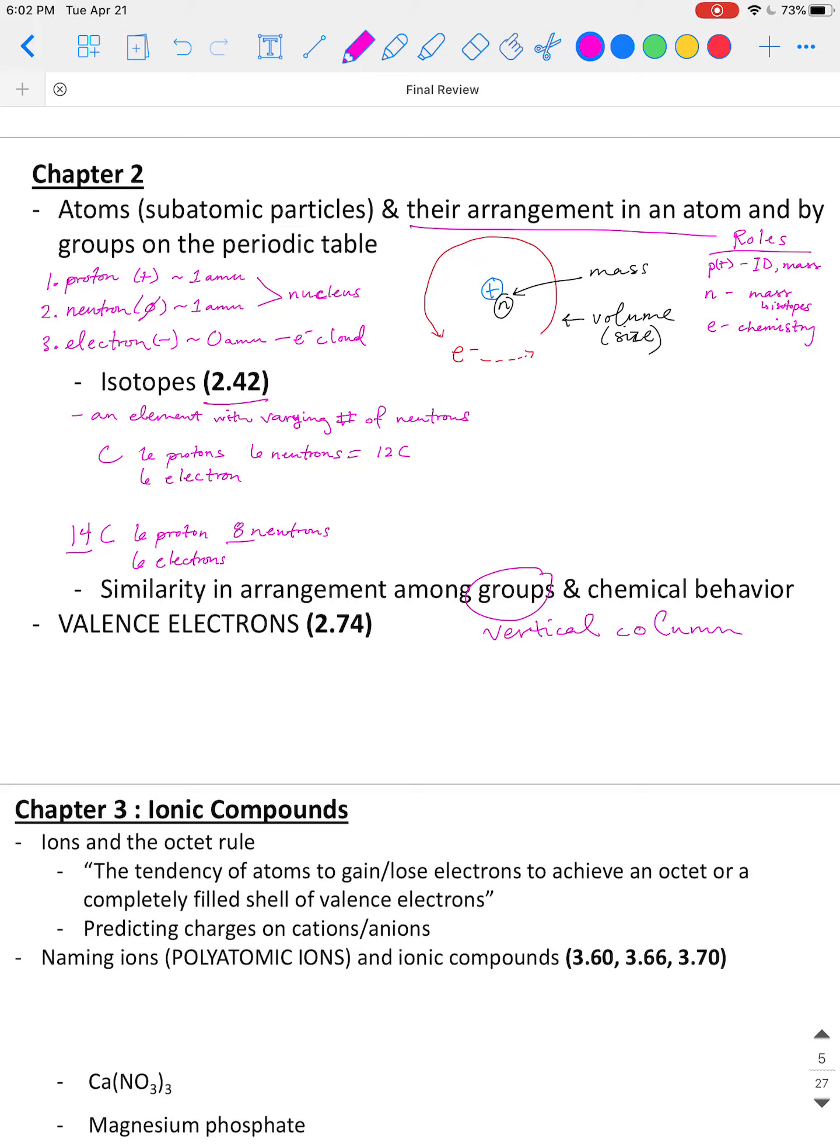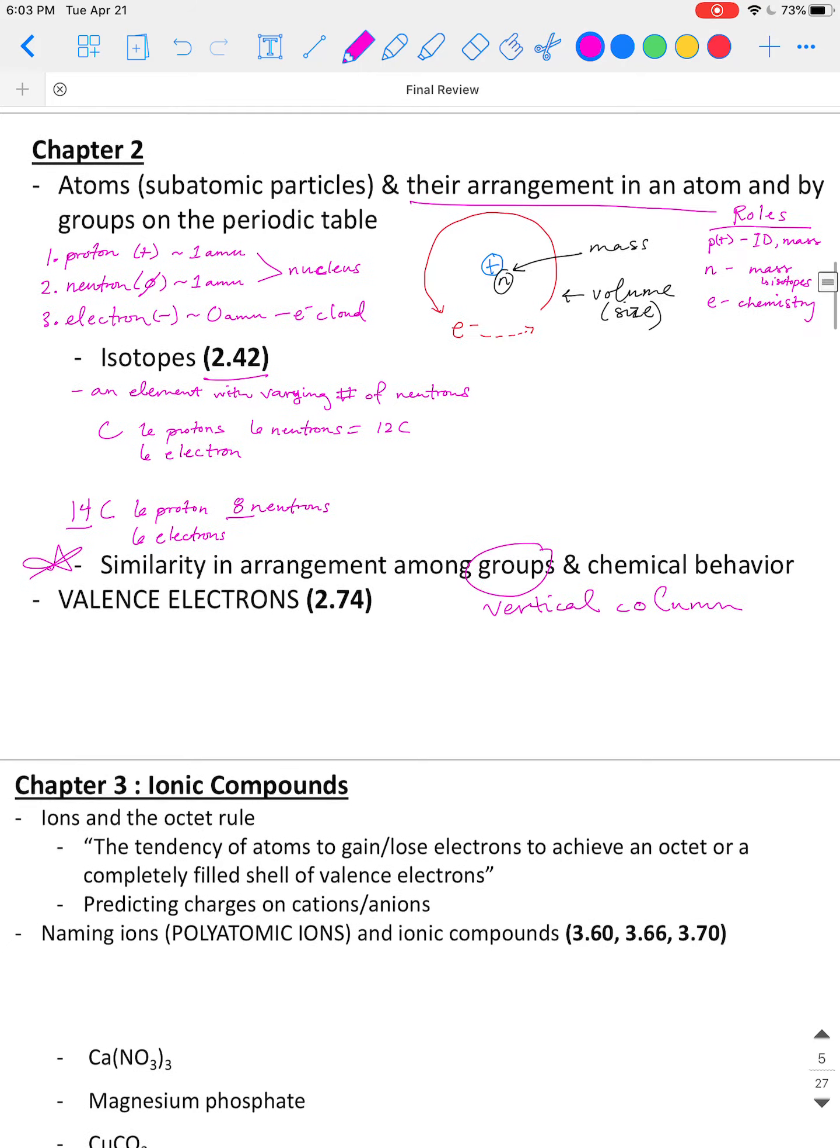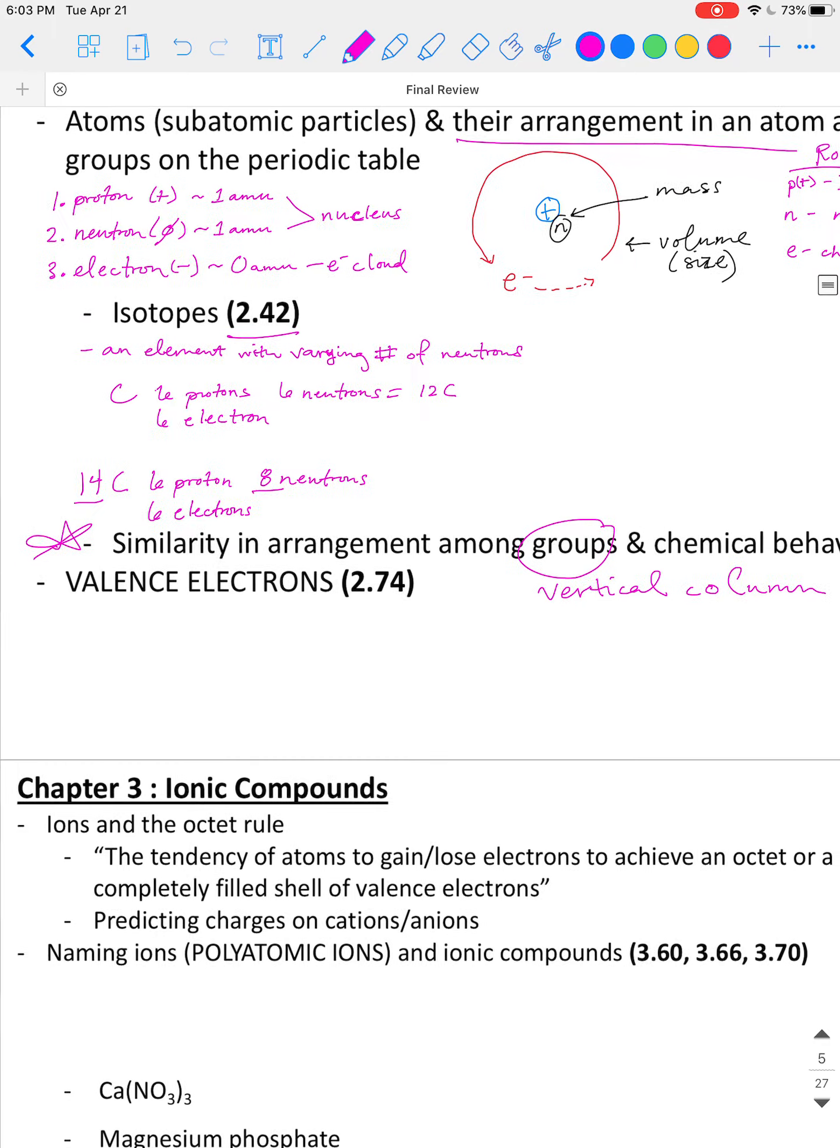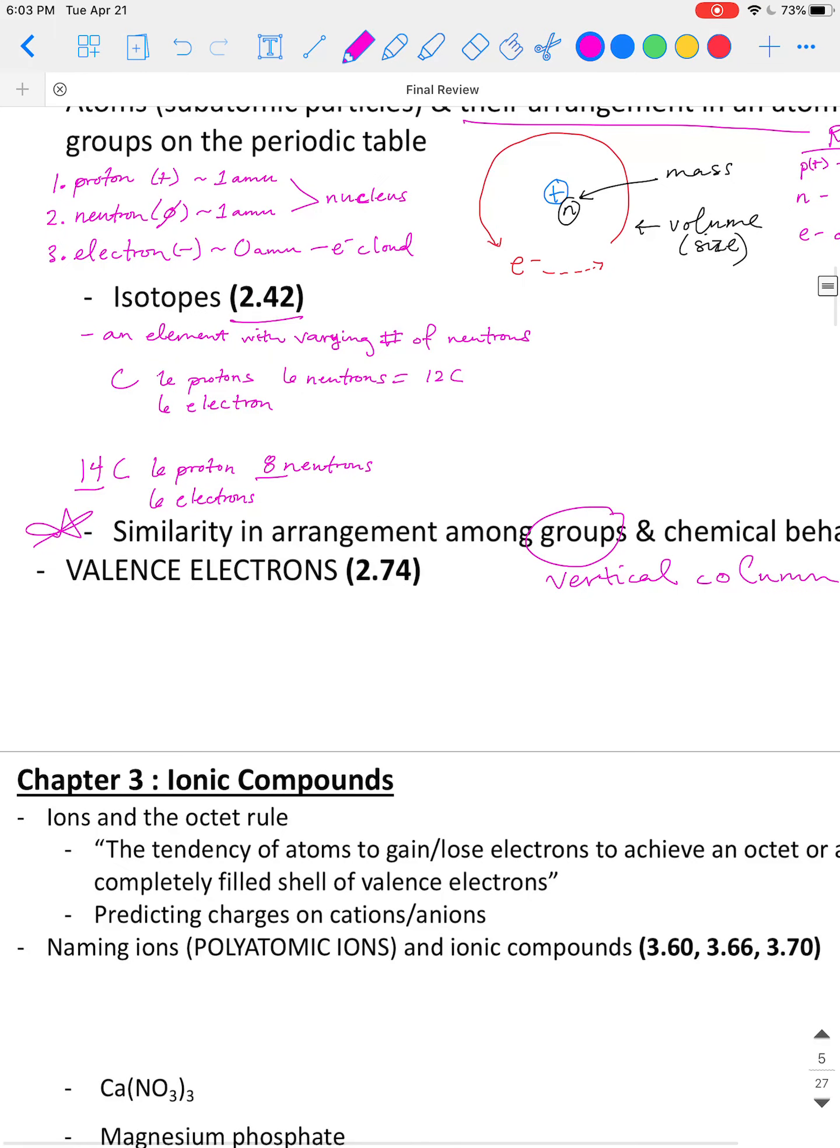And similarly, group 8, any element in that group, it's going to behave the same way in nature. They're very inert. They don't like to react with other things. Halogens are very reactive. Group 1 elements are very reactive. So this point right here is hitting on those things. And that's, again, you can read about it in chapter 2. You can go back to your notes. We lectured on that extensively.